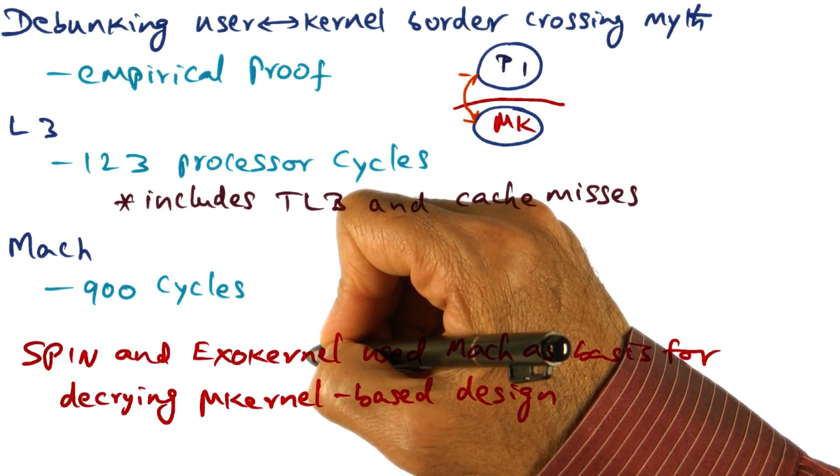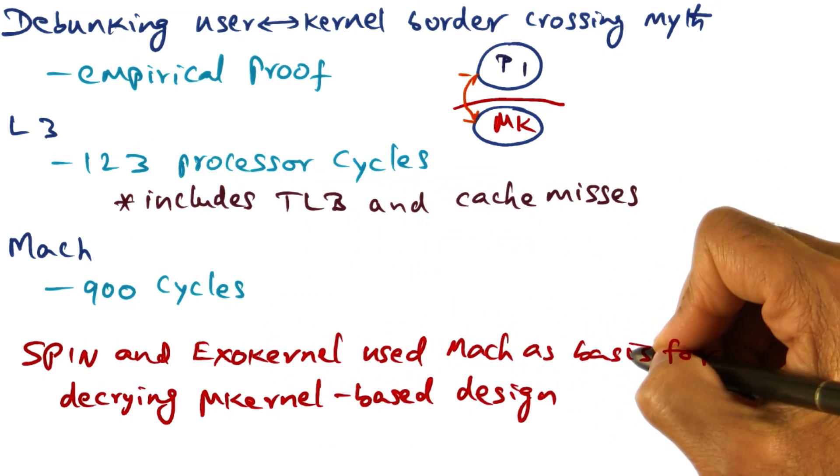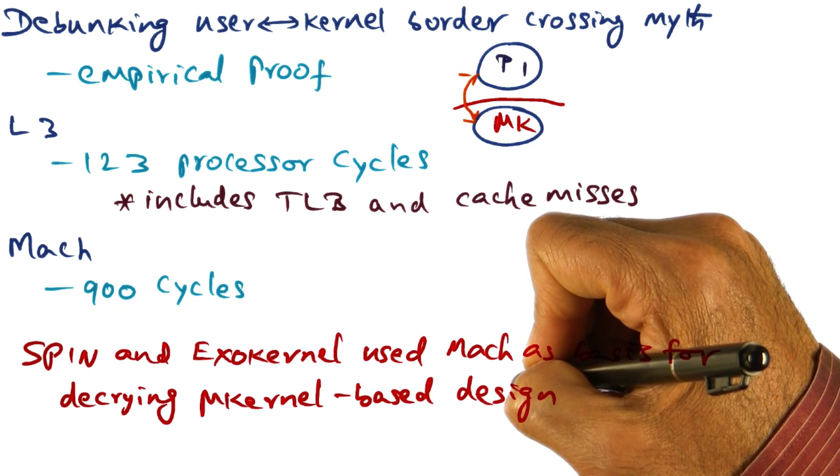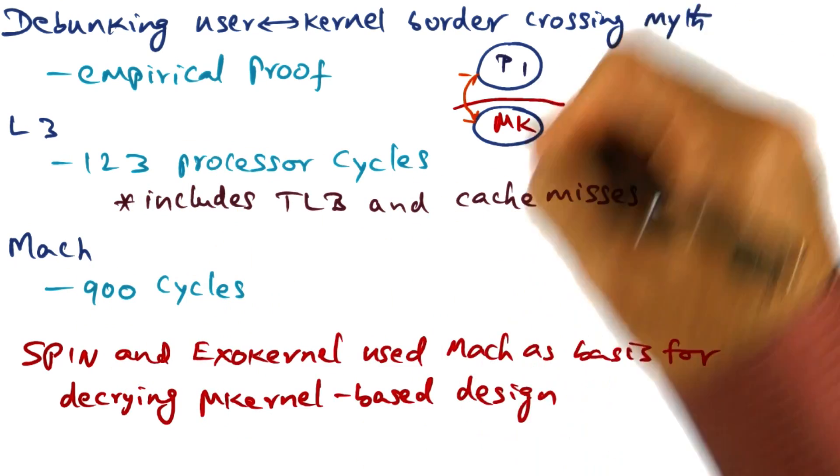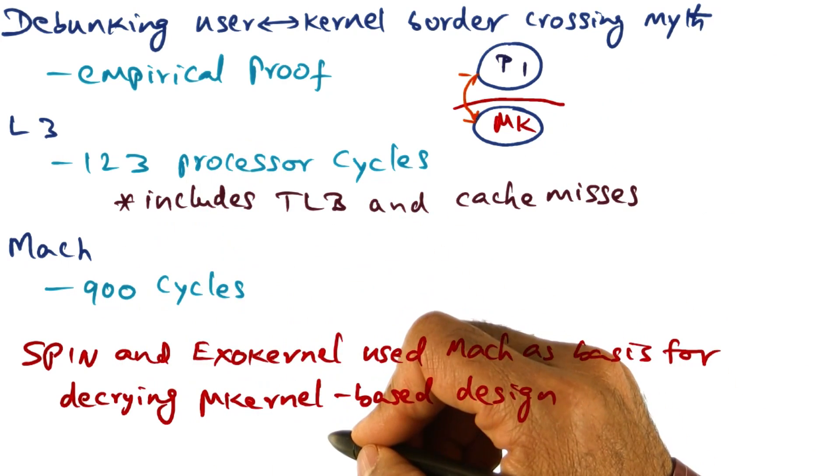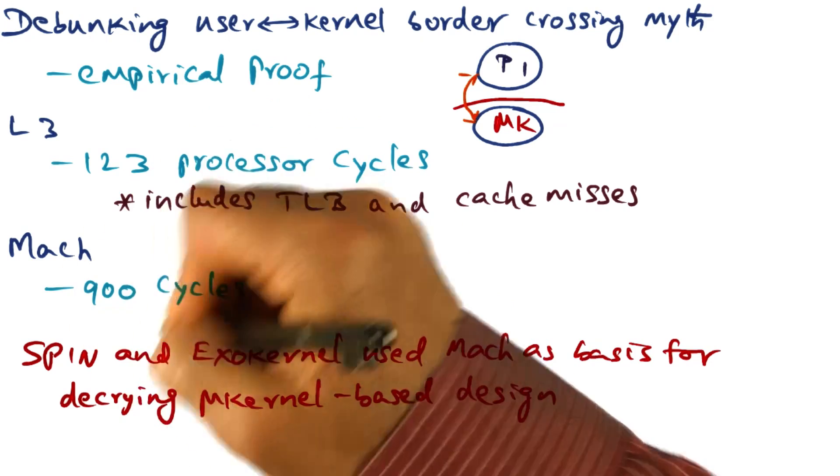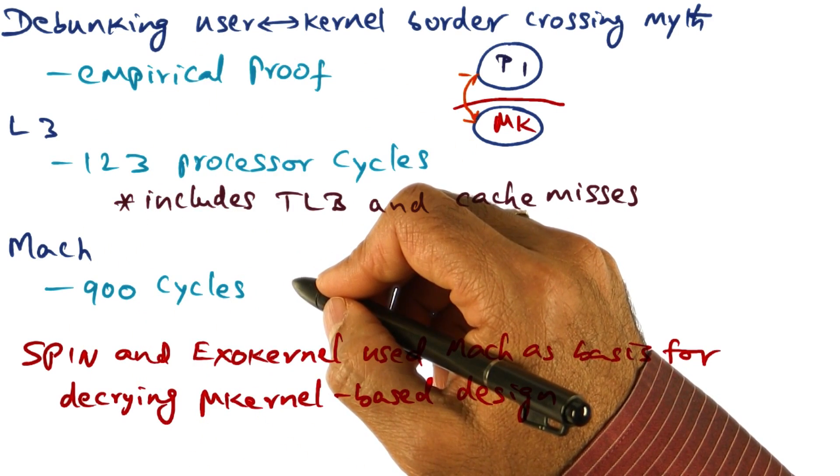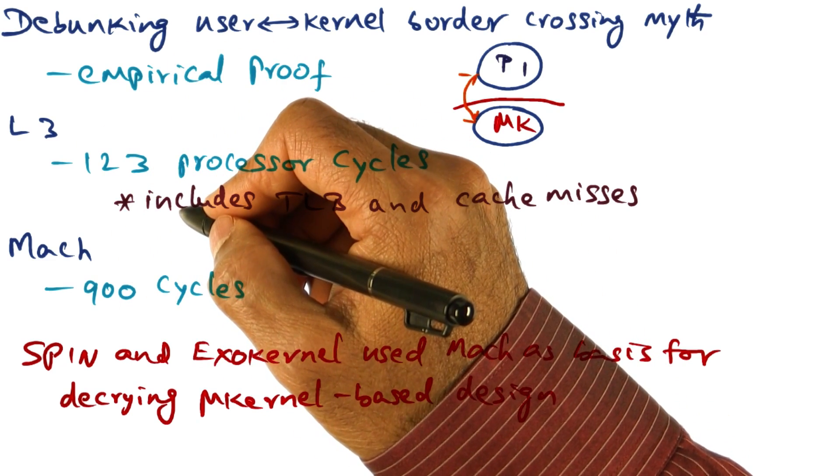Spin and exokernel that we have looked at in fairly great detail used mock as the basis for decrying microkernel based design, saying that border crossing in microkernel based design is expensive because it takes this much time. But what L3 has shown is that it need not take this much time. It can be done in much shorter amount of time, which is close to what the hardware can actually do.